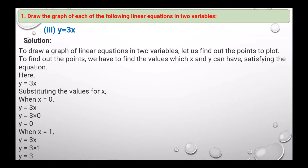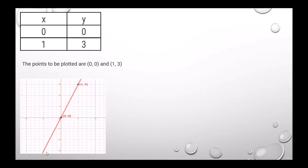Next is y equals to 3x. To draw the graph, we find the values of x and y. Substituting x equals 0 gives y equals 0, and substituting x equals 1 gives y equals 3. The plotted points are (0, 0) and (1, 3), and the graph is drawn accordingly.